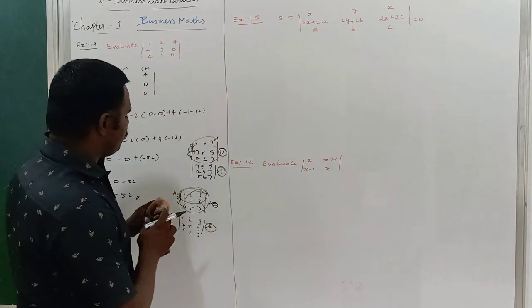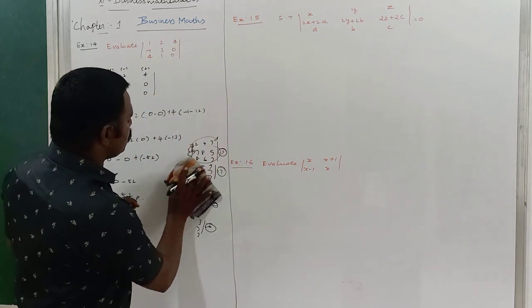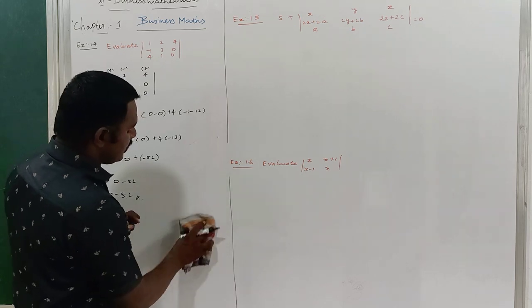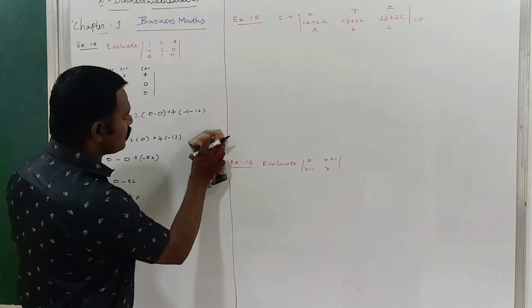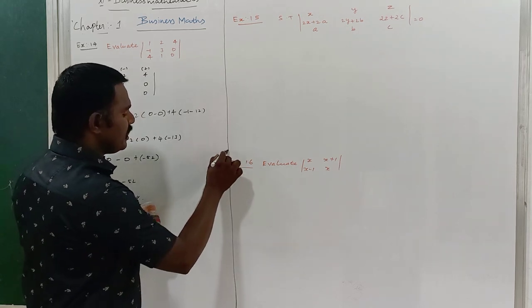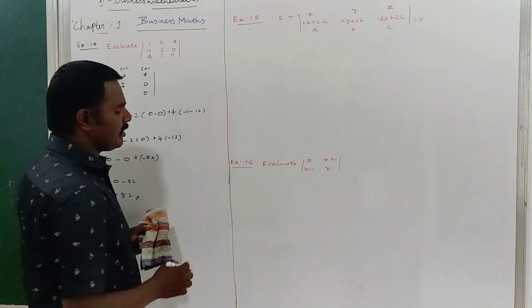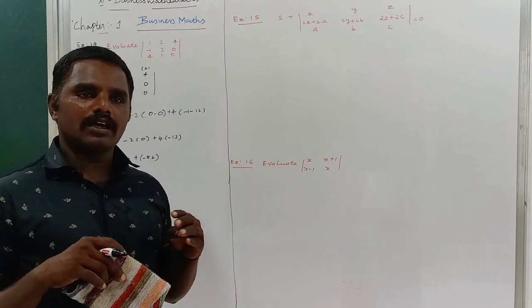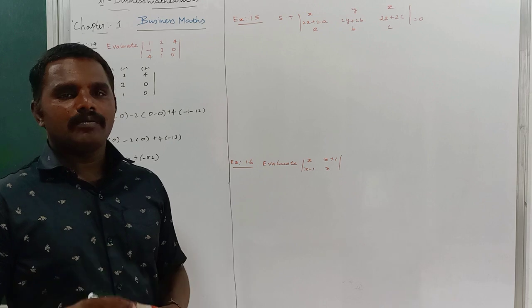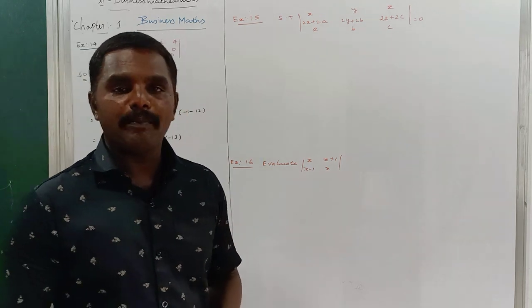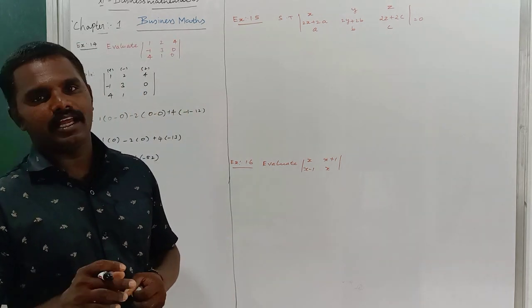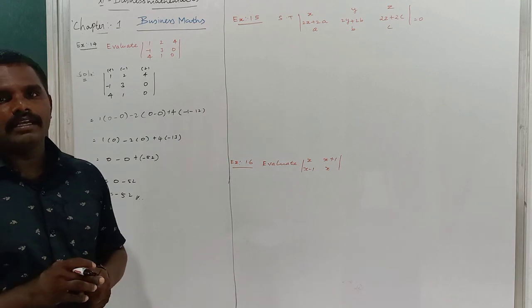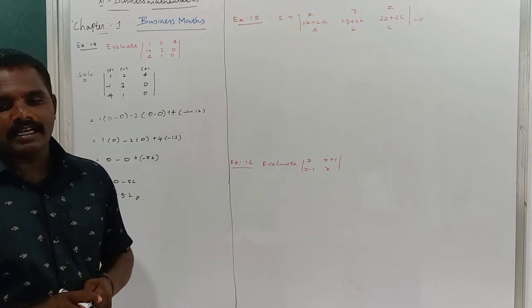Another property is: if any two rows or columns are proportional, the determinant value is always going to be 0. This is an important thing. If you change all the rows and all the columns, the change only happens in the sign alone. So this is a very important thing for matrix and determinants.